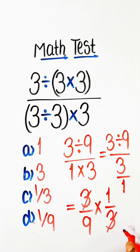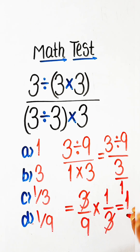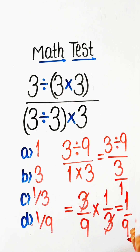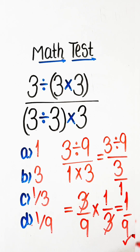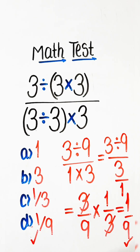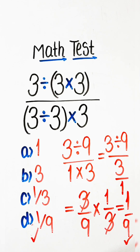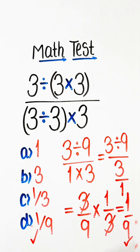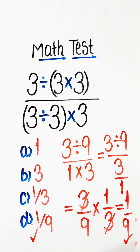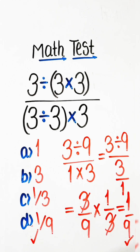The right answer here is 1 upon 9, so Option D will be our correct answer. If you like my video, please like, share and subscribe to the channel.